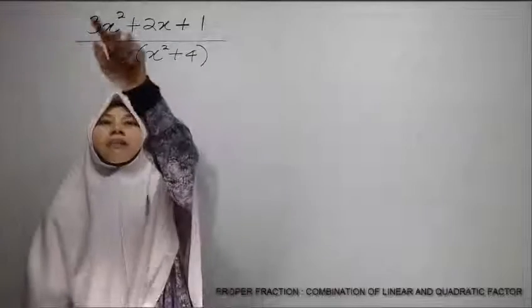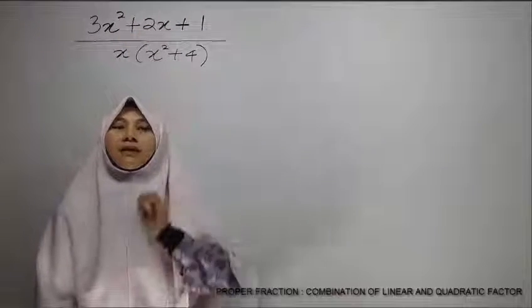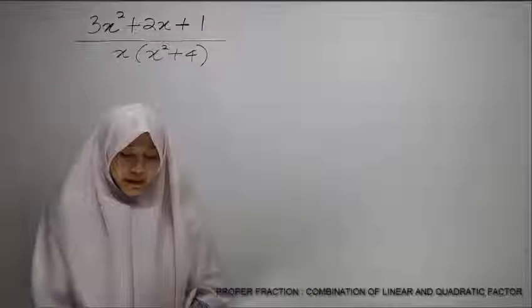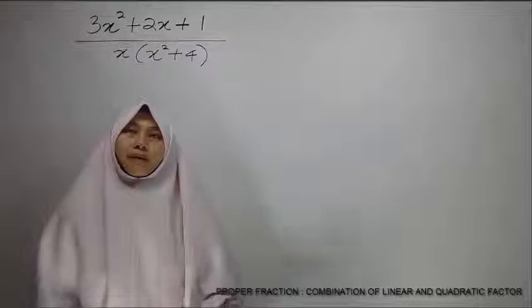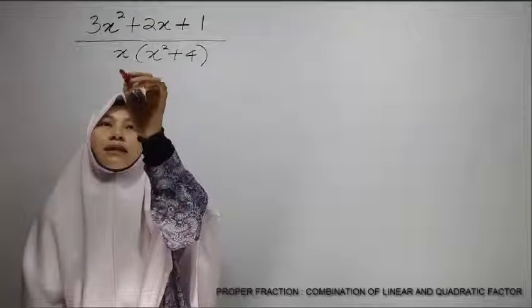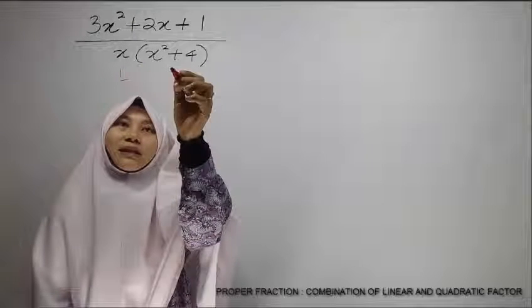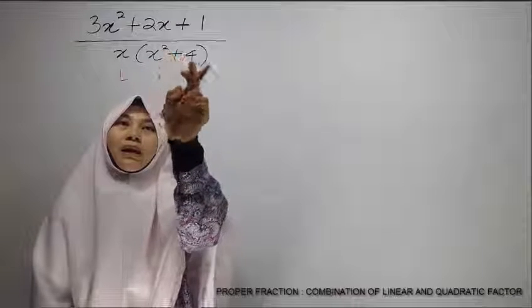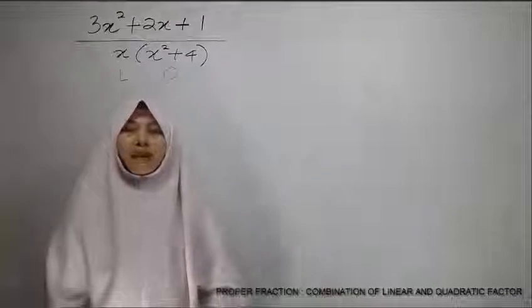Now, if we look at the power of x, so this is confirmed for perfection. Next, we have a limit. The power of x is 1, so this is linear, and this is quadratic because the power of x is 2 and this term here cannot be factorized.